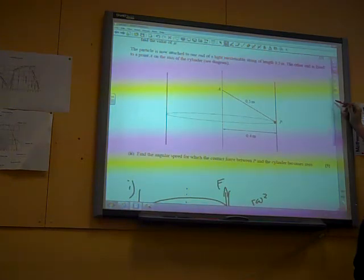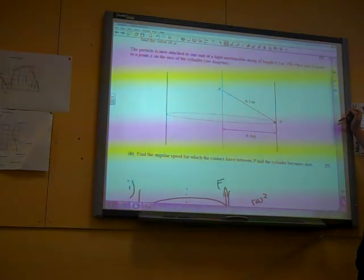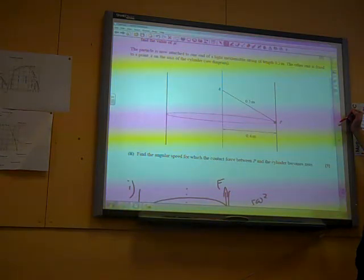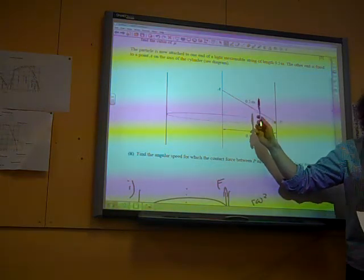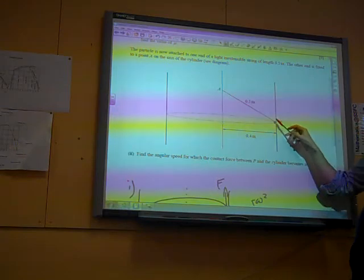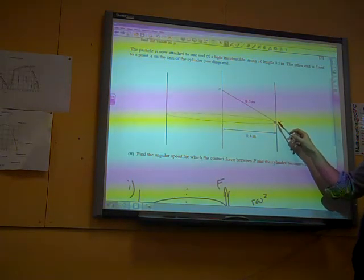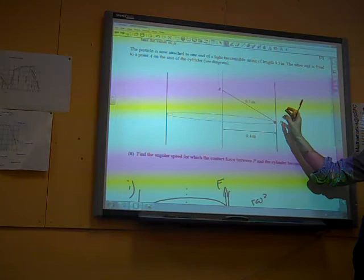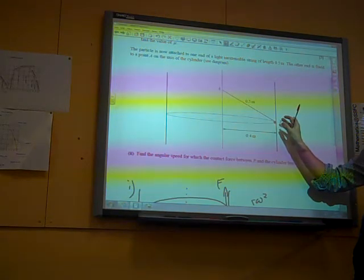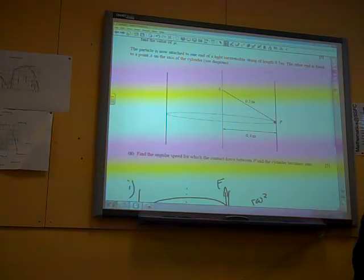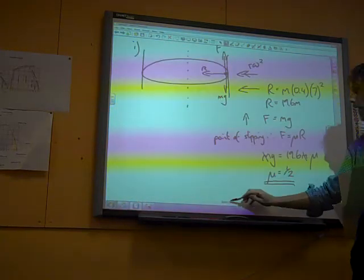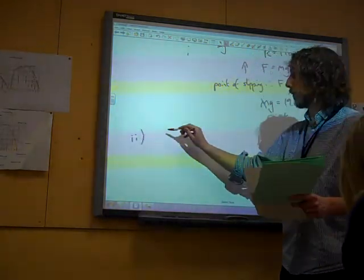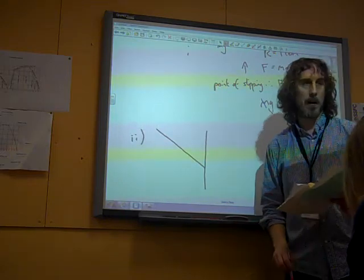The particle is now attached to one end of a light and extensible string of length of 0.5. The other end is fixed to a point A on the axis of the cylinder. And then, find the angular speed for which the contact force between P and the cylinder becomes 0. So, you know what will be happening now. It's moving around. At the point that it becomes 0, it's still, the string is still taut, it's still just about touching that, but not so that there's any contact force. So, it's at the point of no longer touching that. Which means, we don't need to think about friction anymore. In fact, lots of things have become simpler.